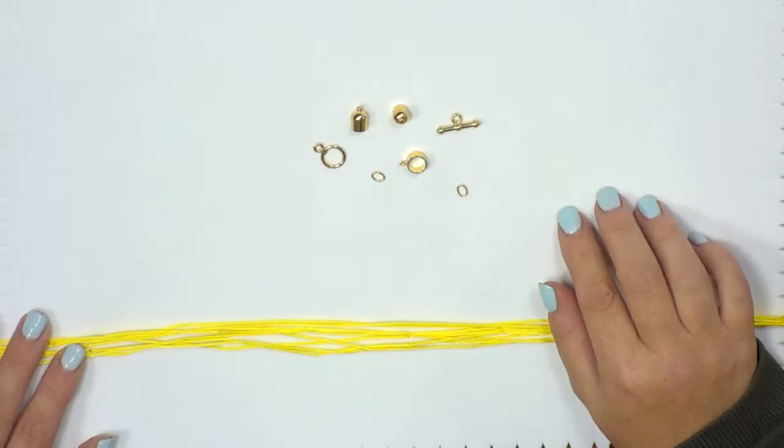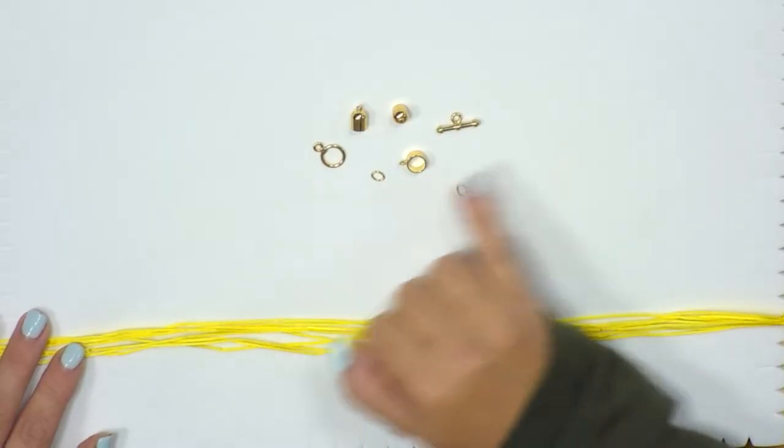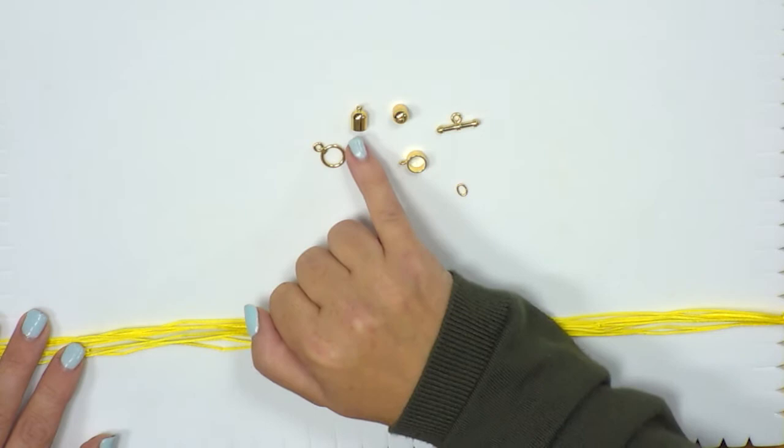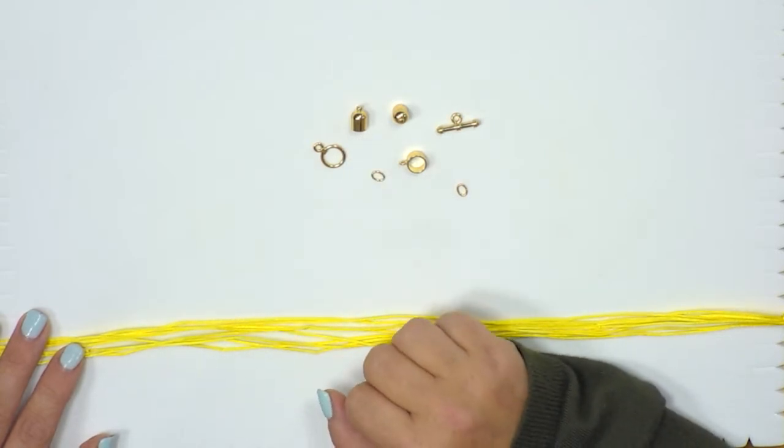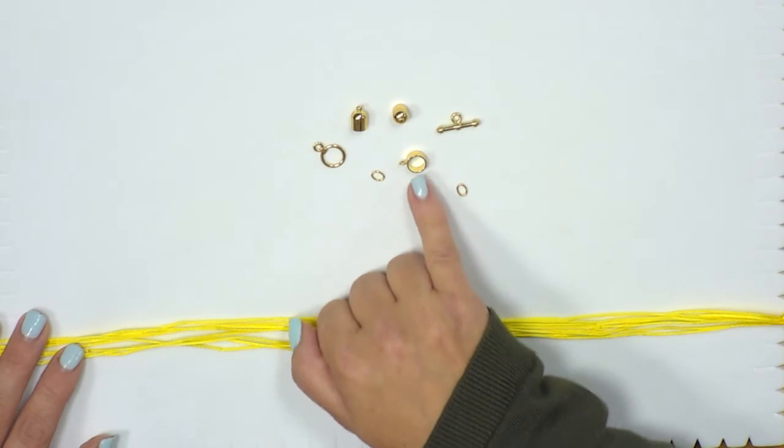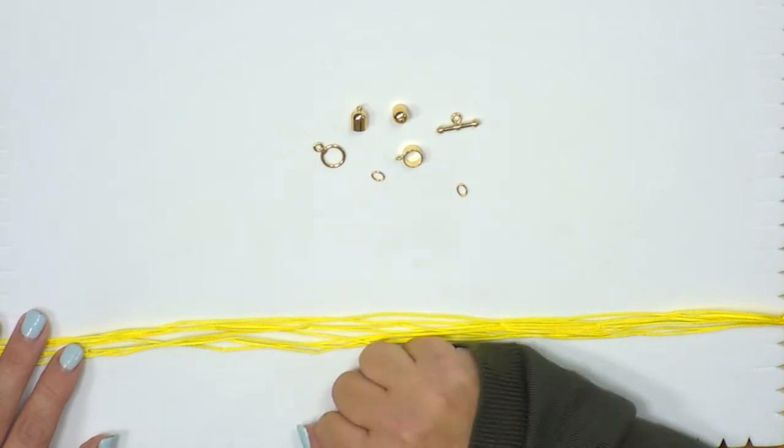And then lastly you're going to be able to get all of your findings as well. So in the findings pack we have the toggle clasps, we have the end caps which are going to close off the end of your bracelet and make it look a nice professional finish, your jump rings and we also have these little attachments that you can pop on if you want to add charms to your bracelet.